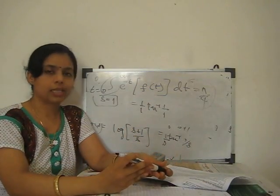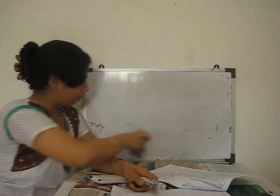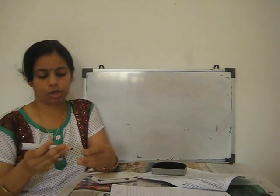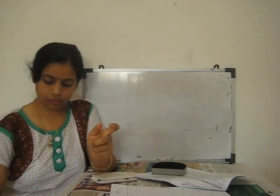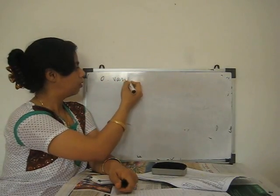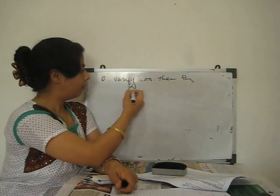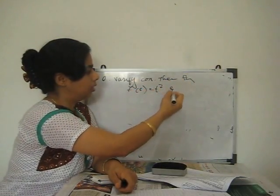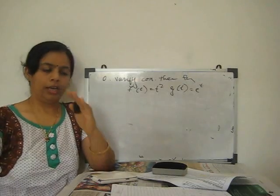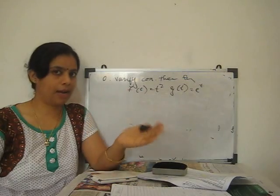Next, one example on the convolution theorem. The question is: verify the convolution theorem for f(t) = t² and g(t) = eᵗ. The convolution theorem states that L{f(t)*g(t)} = F̄(s)·Ḡ(s), where f*g = ∫₀ᵗ f(u)·g(t−u) du.